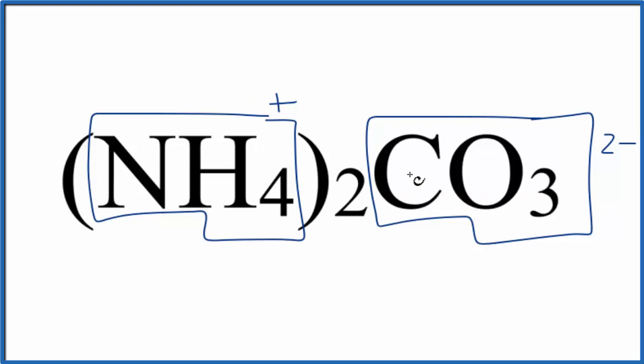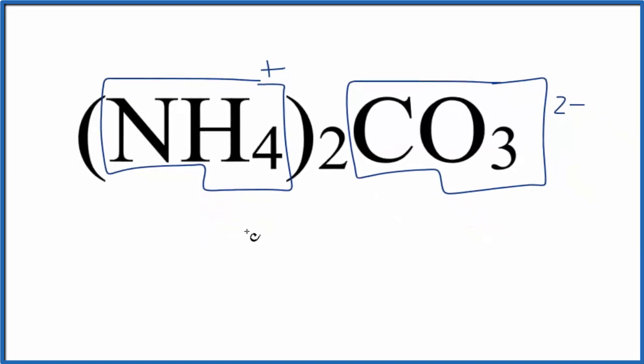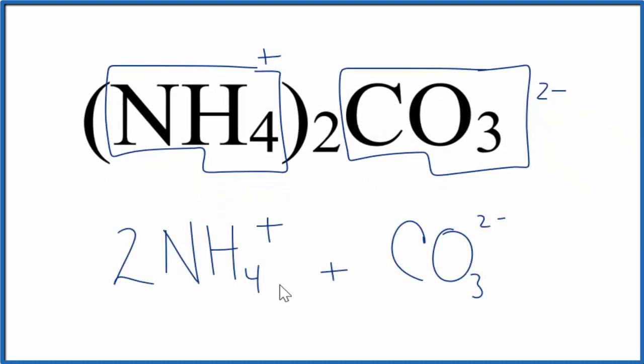And if we put this in water, this is soluble, it'll dissolve and we'll end up with, and these would be aqueous since they were dissolved in water. So we have two ammonium ions for every carbonate ion.